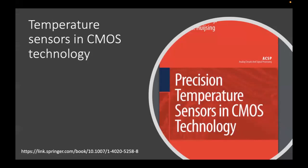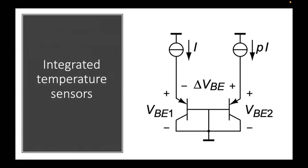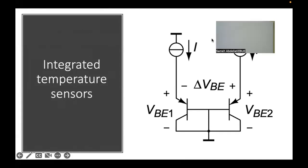I recommend here using the reference 'Precise Temperature Sensors in CMOS Technology.' Fortunately, it is a Springer book series. For our Egyptian students using the EKP link, you can download it for free — that is actually one of the reasons why we selected this reference. So let's start demonstrating the sensor. This is a very basic schematic for an initial attempt to make a CMOS temperature-based sensor. Let me start with a quick flashback into the basics of this schematic.